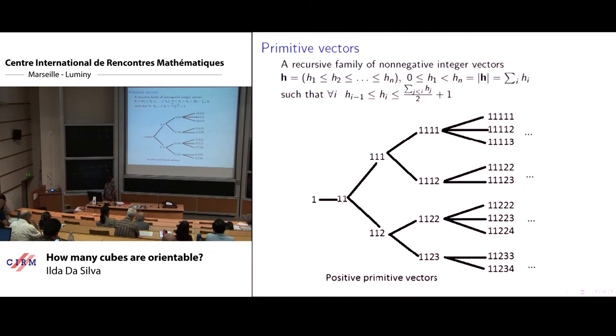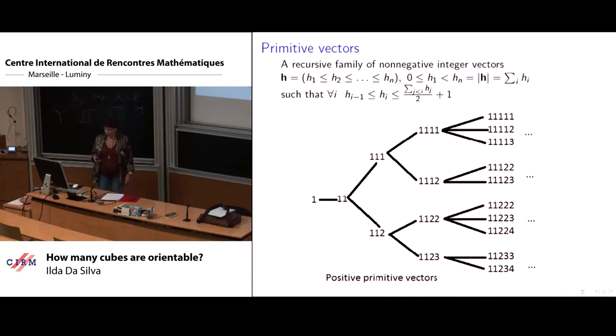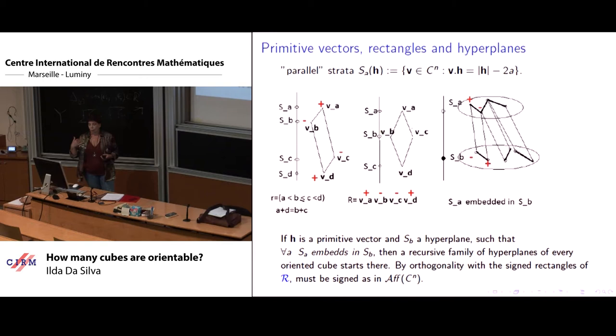And this goes on. Starting here, one, one, two, half is two, so I can prolongate with two or three, and so on. For this kind of vectors, and now this is vectors with integral and positive entries, have very nice properties with respect to rectangles.